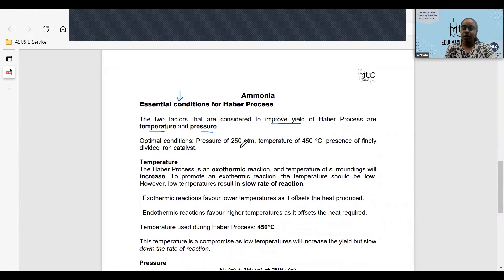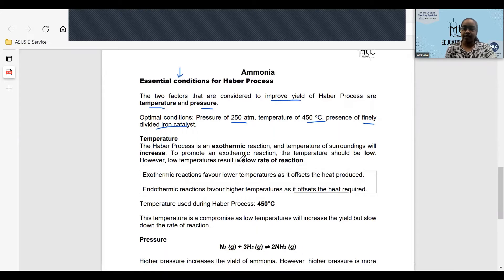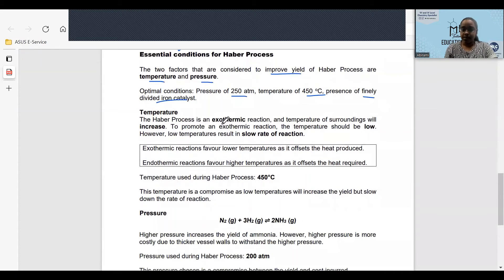Optimal conditions are pressure of 200 atm, temperature of 450 degrees Celsius, and the presence of finely divided iron catalyst. The Haber process is an exothermic reaction and the temperature of the surroundings will increase.